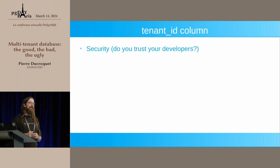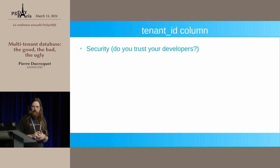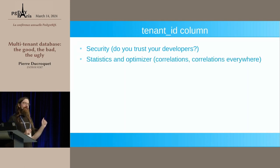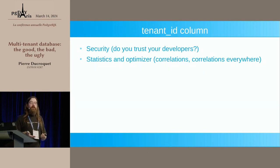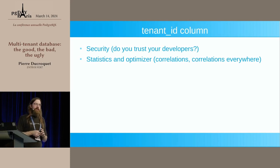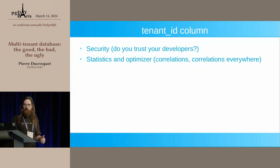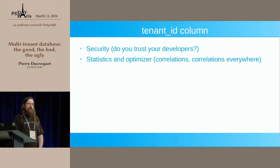The first issue with the tenant ID column is security: can you trust that every place in your application will always include the criteria on tenant ID? I thought it was possible, but obviously it's not. The second problem — for the DBA — is that when PostgreSQL executes a query, it gets statistics and tries to guess the proper execution path. With a tenant ID column, all data is in one table, and the statistics cover what the optimizer can handle, which is not a lot when the table is far too huge.